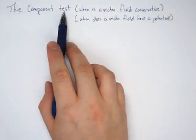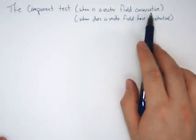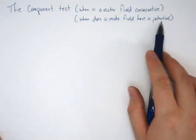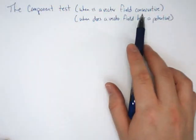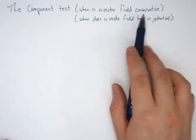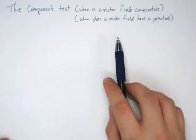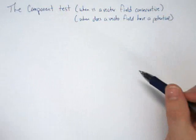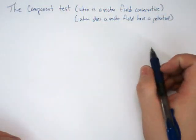In this screencast, we're going to look at something called the component test, or how do you know if a vector field is conservative or if the vector field has a potential. These are actually synonyms in some sense that vector fields are conservative when they have a potential. The next screencast is going to spend a lot of time on the word conservative. For now, we need to know when do you know if you can find a potential.